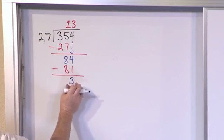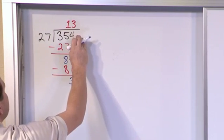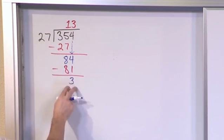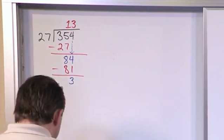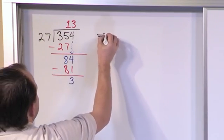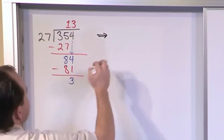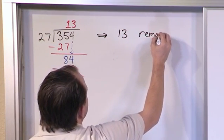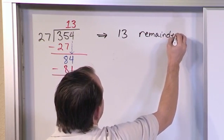So when you get done with this you look up here and you see do I have any more numbers to drop down? I don't have any more numbers to drop down. 27 cannot go into 3. So I'm basically done. So what I have figured out the way you write this down is that the answer to this problem 354 divided by 27 is 13 with a remainder of 3.